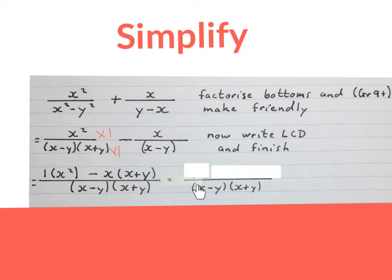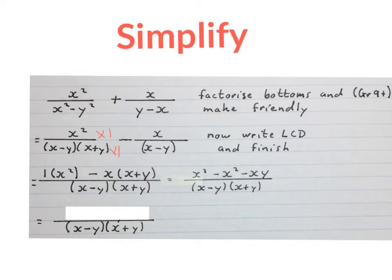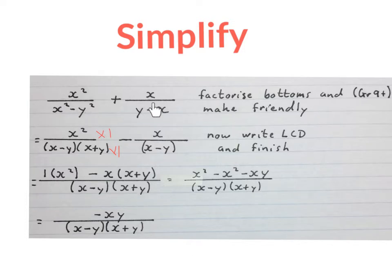Keep your LCD and long line — you times the 1 with x squared and get x squared. Then you times the minus x into the bracket, giving minus x squared minus xy. Now simplify the top: x squared minus x squared cancel each other, so you're left with minus xy at the top.